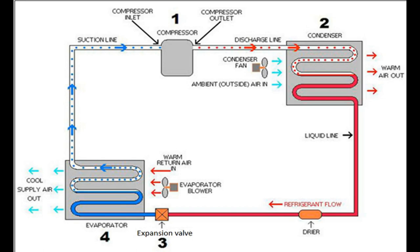At the expansion valve, high pressure, high temperature liquid refrigerant enters and is converted into low pressure, low temperature liquid refrigerant due to controlled flow restriction, then goes to the evaporator. At the evaporator, low pressure, low temperature liquid refrigerant enters. The refrigerant absorbs latent heat from the enclosed area or substance and converts into vapour. The low pressure, low temperature vapour refrigerant then goes back to the compressor through the suction line.